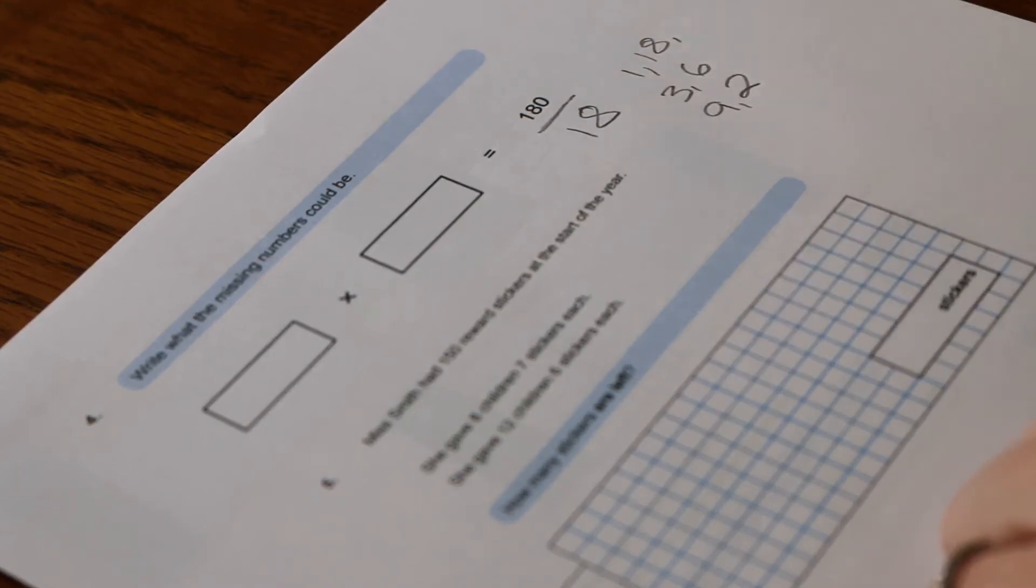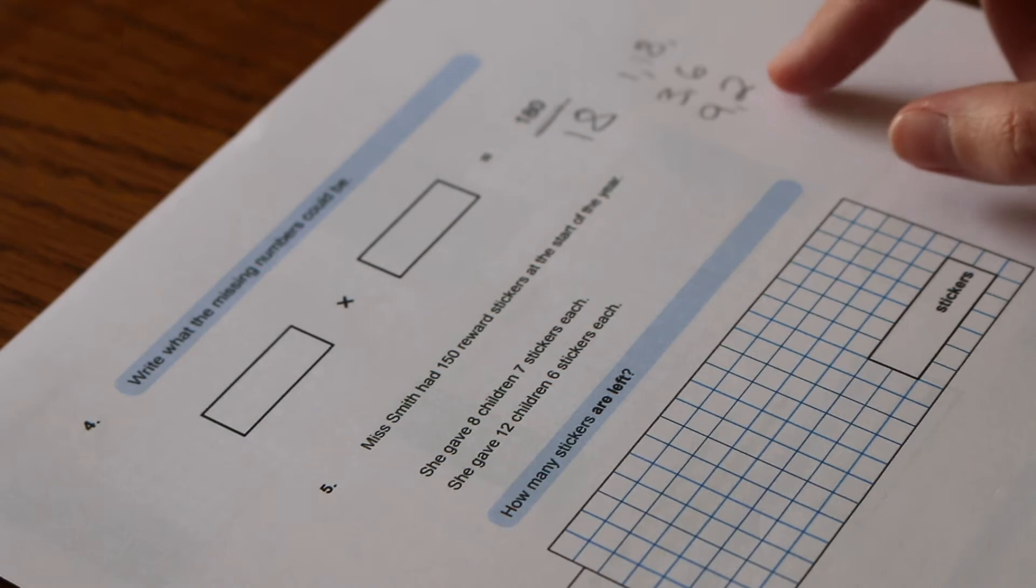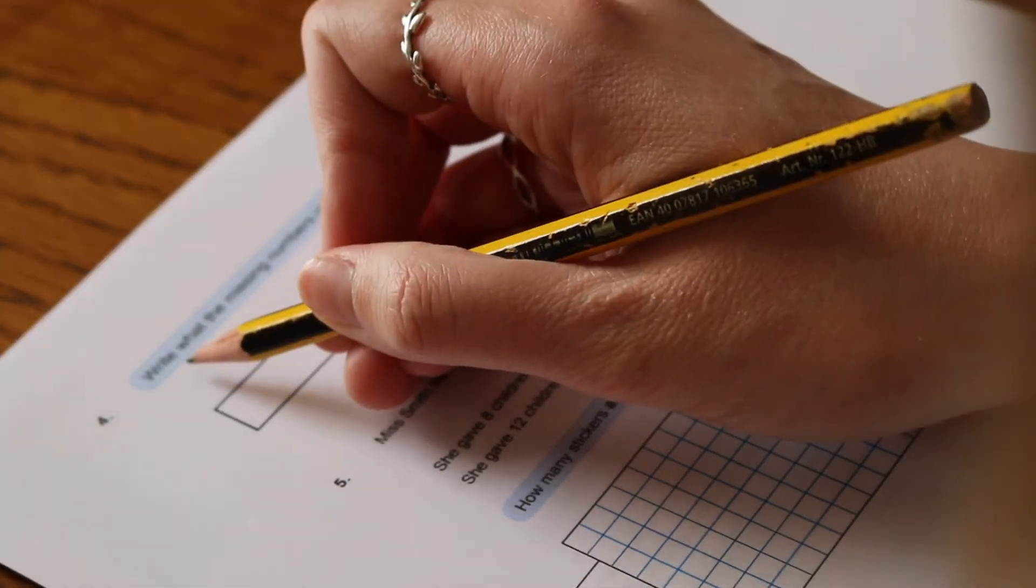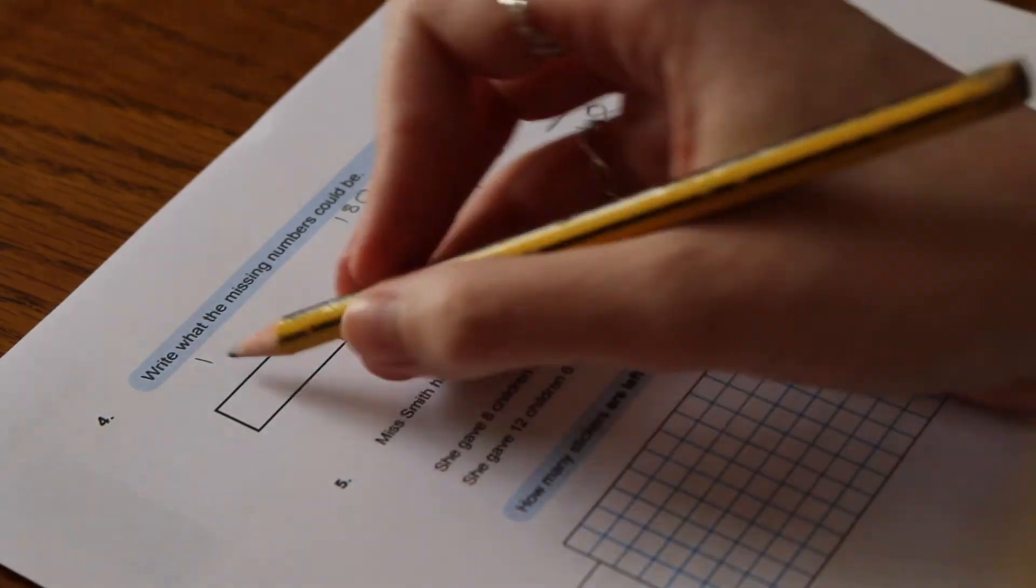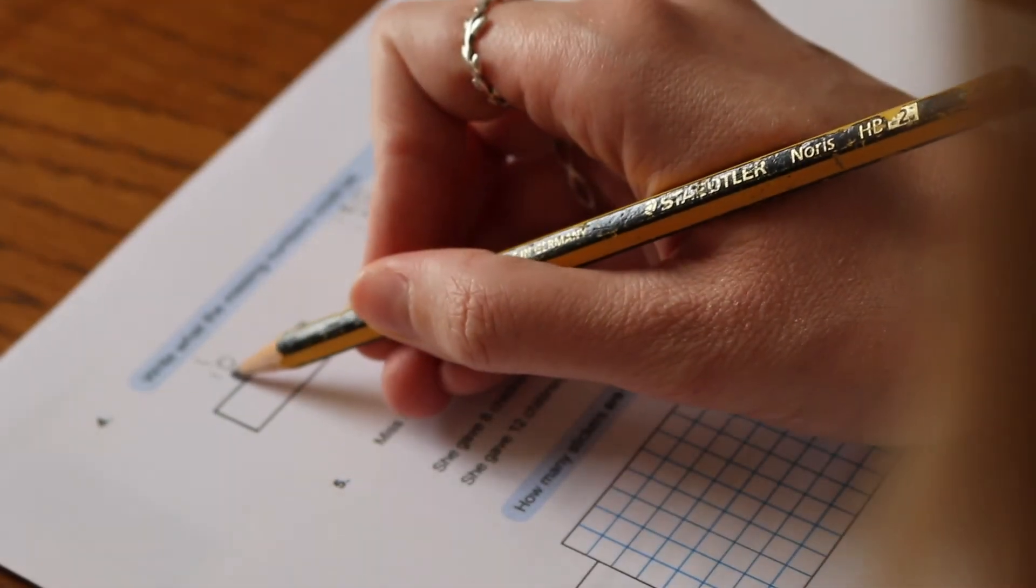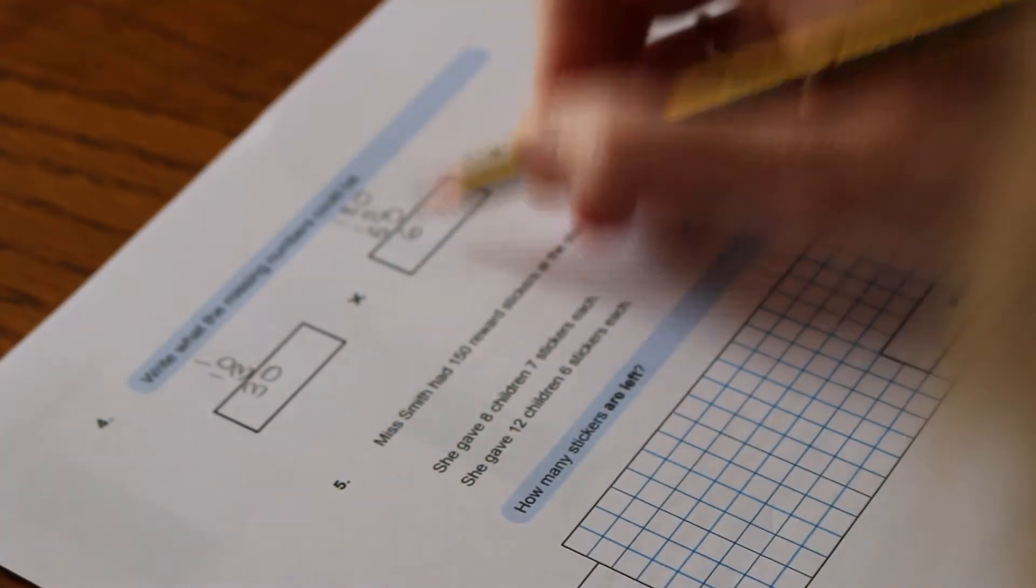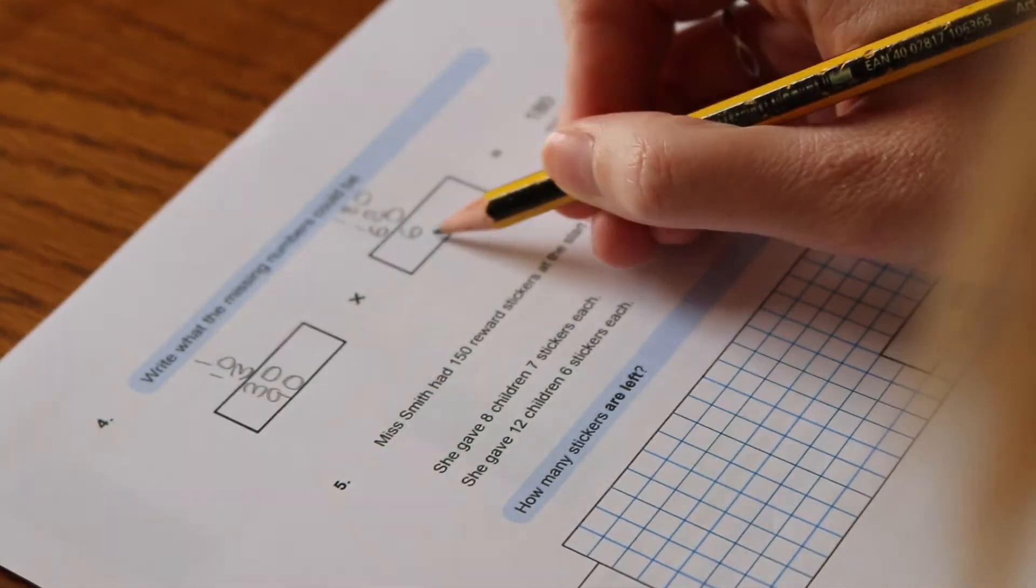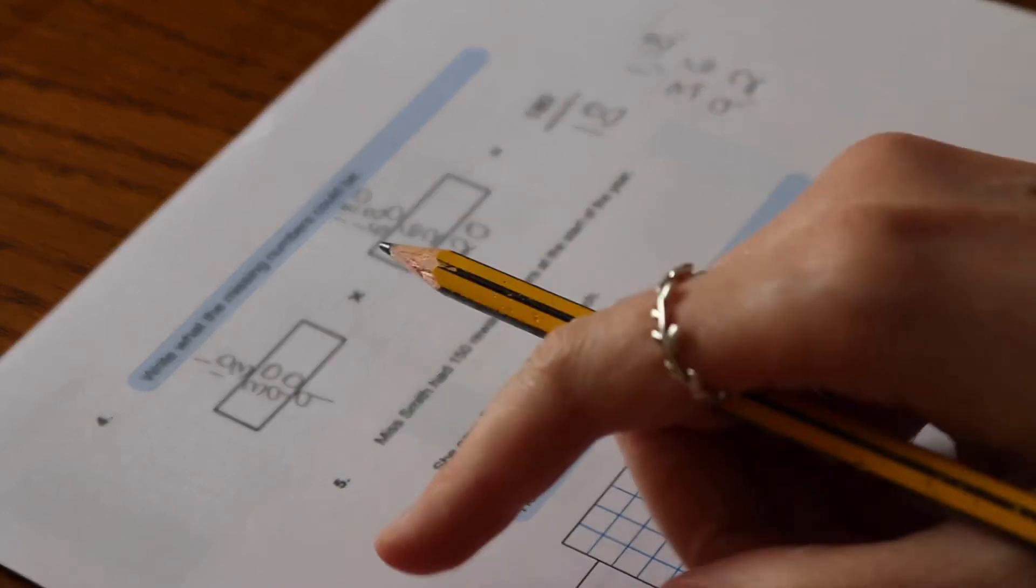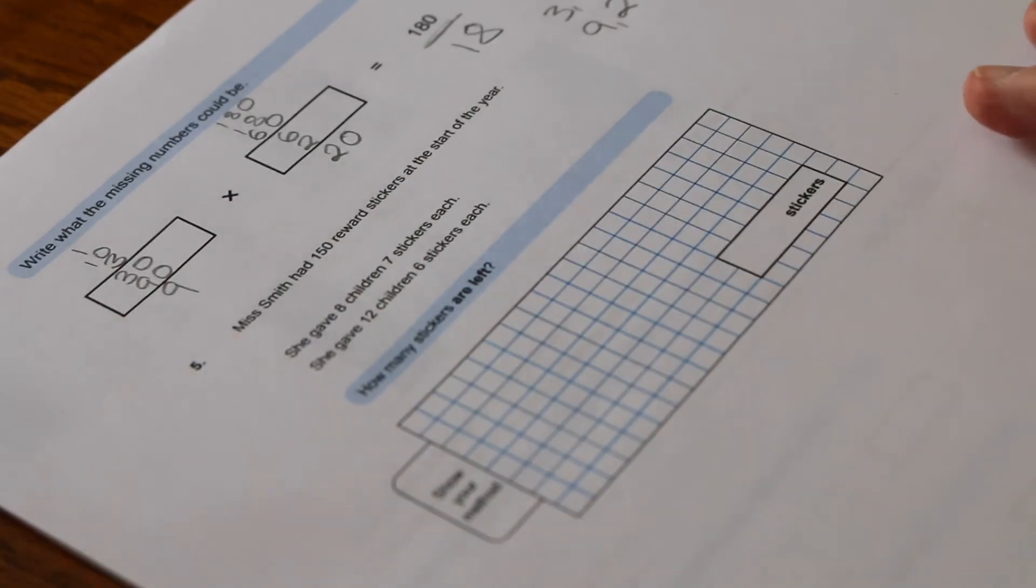However, we want 180, so one of these needs to be multiplied by 10. So there were several different combinations you could have had for this question and I'll write them all down here. So you could have had 1 times 180, you could have had 10 times 18, you could have had 3 times 60, you could have had 30 times 6, you could have had 90 times 2, or you could have had 9 times 20. So those are all of the combinations that you could have had to get to 180.